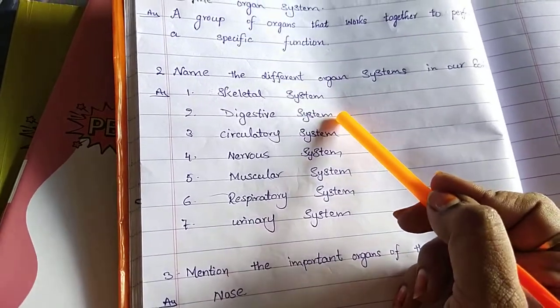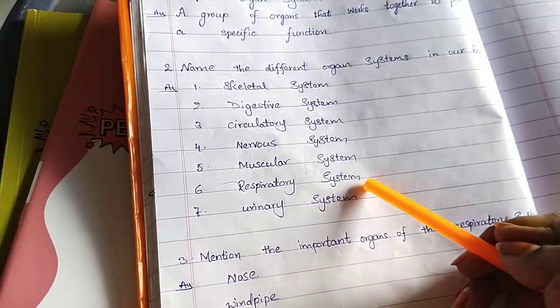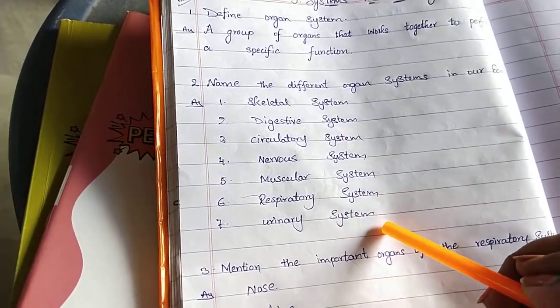Skeletal system, digestive system, circulatory system, nervous system, muscular system, respiratory system, and urinary system.